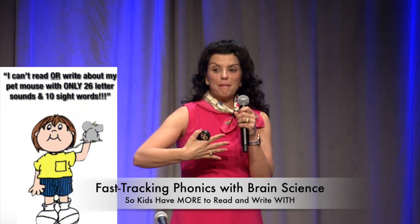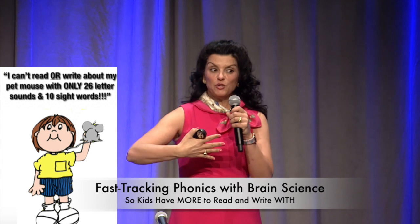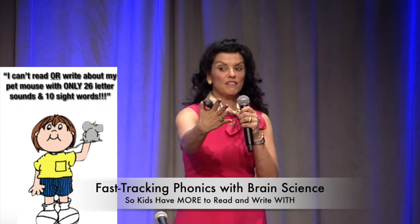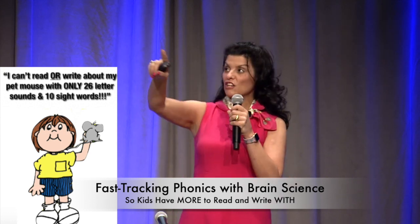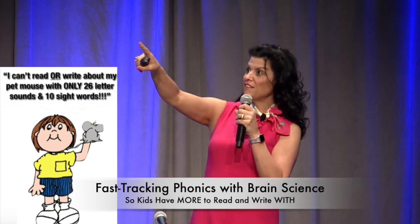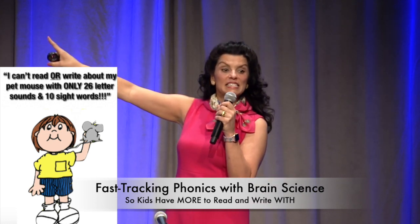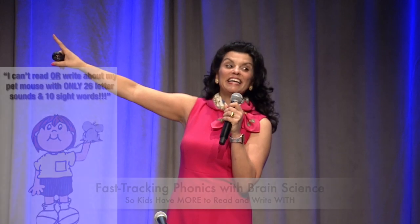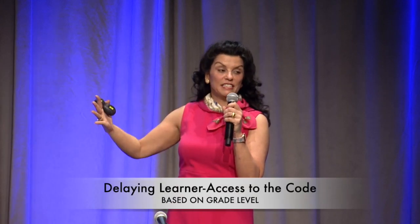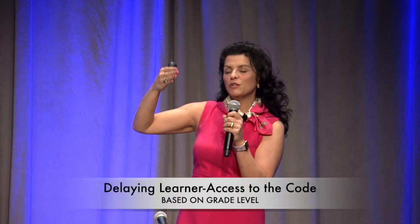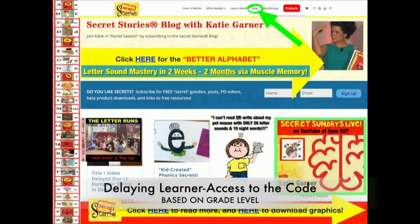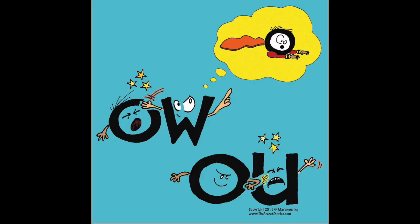If I have a pet mouse and I want to write about my pet mouse and it is kinder or even first grade, I could stare at my alphabet train all day long and I will never find the letter that says OW because it is not up there. And by the time I get it, if I use a standard reading series — the scope and sequences are broken down so you can see which parts of the code kids get in which grade level — the OU/OW is traditionally taught in second grade.